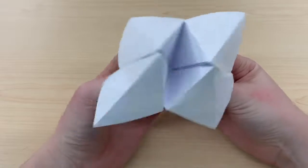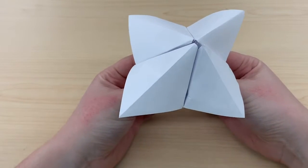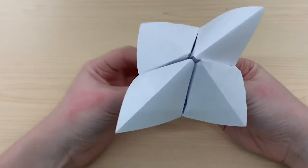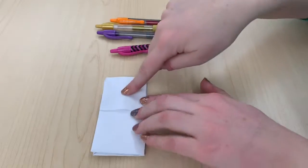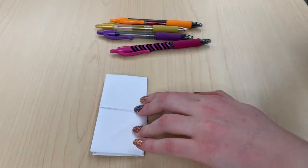And of course, this is just the blank fortune teller. So the next part is adding all of your numbers and colors and of course the fortunes. So traditionally, you want each of these corner flaps, the outermost thing you're going to see, to be a color.